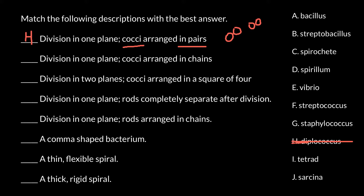Next: division in one plane, cocci arranged in chains. The organization would be cocci — meaning round — arranged in chains. We should find 'cocci' in the name, and chains means 'strepto'. So it's going to be streptococcus. And this is answer F: streptococcus.